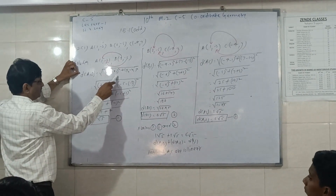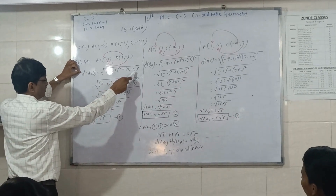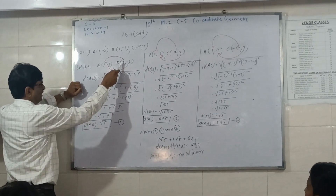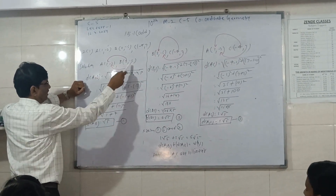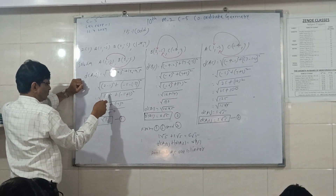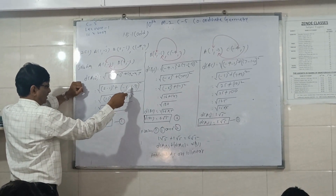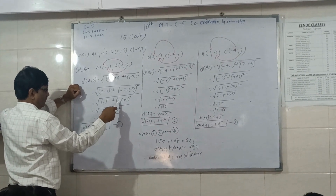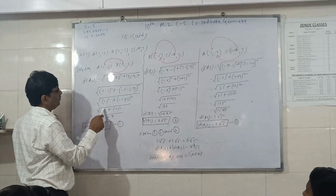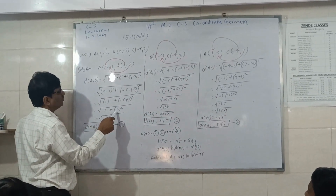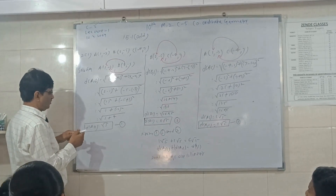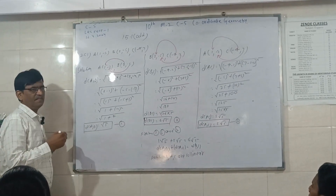A, 2 minus 6, 1. So 2 minus 1, 2 minus 5, minus 3. So 1 squared, minus 5, 3 minus 2. So 1 squared plus 2 squared equals 4. 1 plus 4 equals 5. So distance AB is equal to root 5.